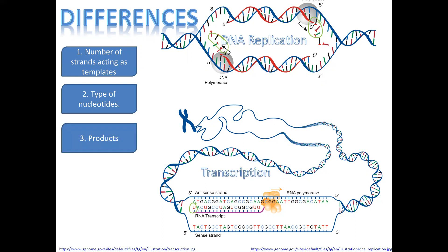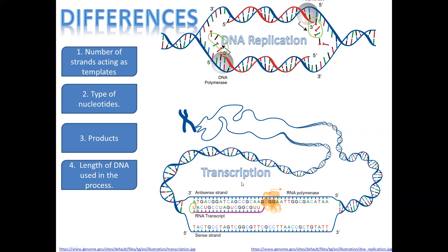The products also differ. In DNA replication, two identical strands of DNA are formed. In transcription, the product is an mRNA molecule. Additionally, the length of DNA used differs: in DNA replication, the entire DNA code is copied from start to end, whereas in transcription only a small portion of the DNA — known as the gene — is copied in the form of the mRNA.